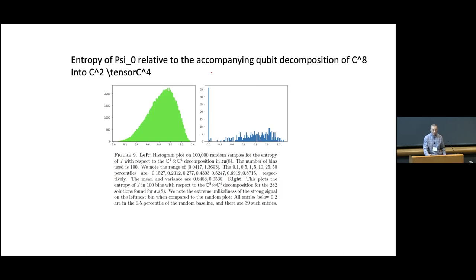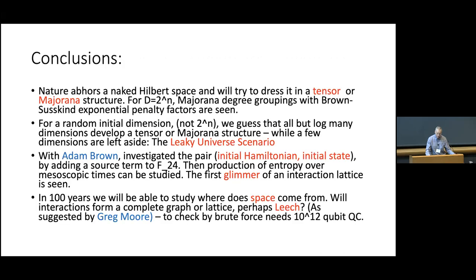And this is the same story with SU(8). SU(8), the green again is the distribution for the entropy of a C^2 versus the entropy of a random vector with respect to a fixed 2 times 4 decomposition. And the blue is our evidence from 260 some solutions that we found. And again, there's this large spike at zero entropy.